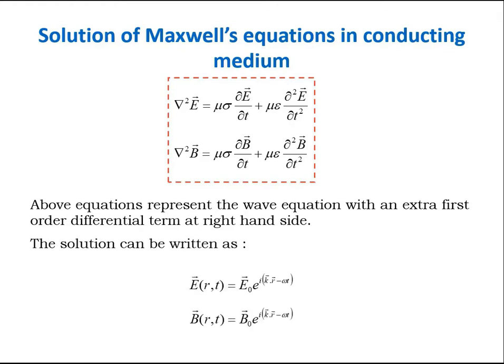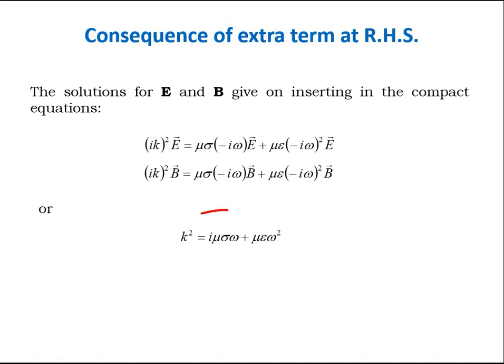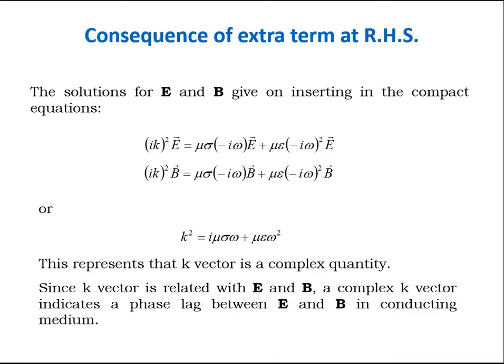Then what is the difference in this case? Let us discuss this. If you remember the wave equation in E and B for free space and compare them with those for conducting medium, then you will find this extra term with differential of the field with respect to time. And we need to find the effect of this extra term in case of conducting medium. For this, put the wave solution of E and B in the wave equations. By this, we get these equations for E and B giving the relation for k square, which is a complex number. Because square of k is complex, so k will also be the complex number. We need to find the form of this wave propagation vector. Also, since k is related with E and B, a complex k vector indicates a phase lag between E and B in a conducting medium, which was zero in case of free space and dielectric medium, because k vector in those cases was real quantity.